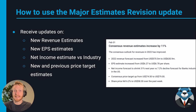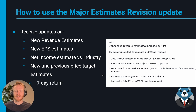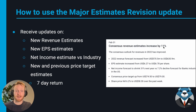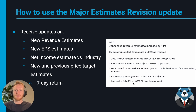If it's below average, there might be better opportunities for higher net income growth within the industry. The update also covers the new and previous price target estimates, to show whether the revised revenue and EPS estimates were enough to push analysts to change their price target — typically a major revision is an increase or decrease of 10% or greater. Lastly, the seven-day return is included to show how the market has reacted to the change in analyst estimates, giving us context on whether the market had already priced it in.